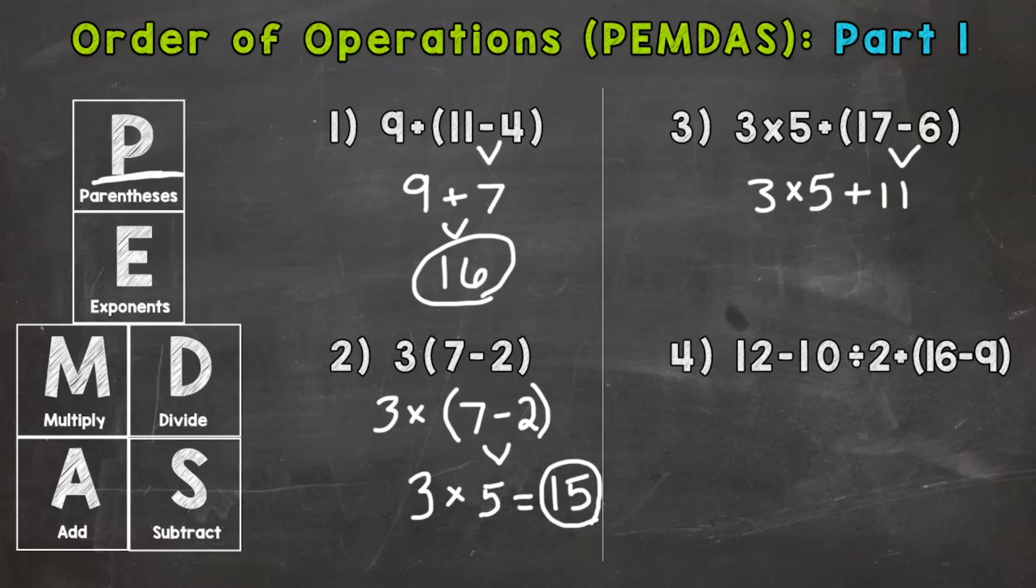So let's go through our steps. Any parentheses now? No. Any exponents? No. Any multiplication or division? Yes. So that's what we need to do next. So three times five is fifteen. Drop whatever we haven't used yet. So we have fifteen plus eleven which will get us to twenty-six.